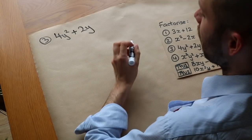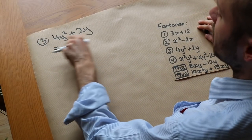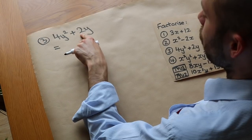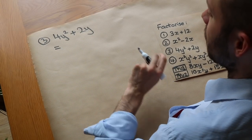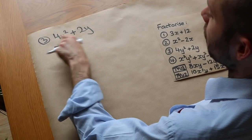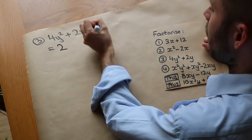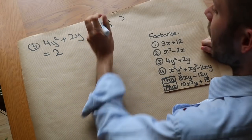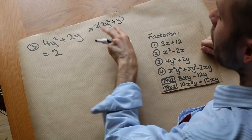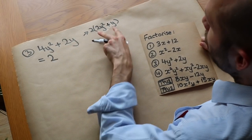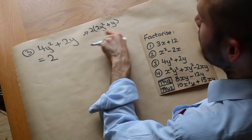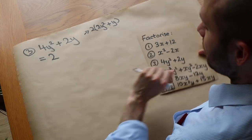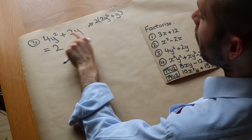Now a slightly harder one: 4Y²+2Y. This is harder because we have both numbers and variables in common. Starting with the numbers: what is common to 4 and 2? The highest common factor is 2. We could take out 2 and write 2(2Y²+Y), but that's not the complete factorization — there's still more we can take out. For an expression to be fully factorized, you must take out every possible factor.